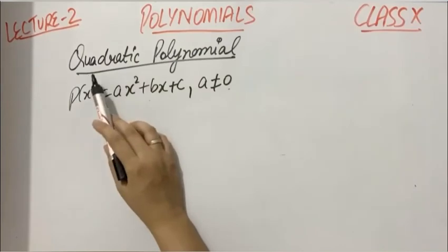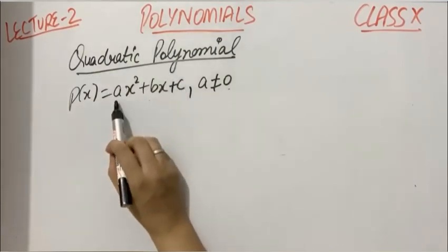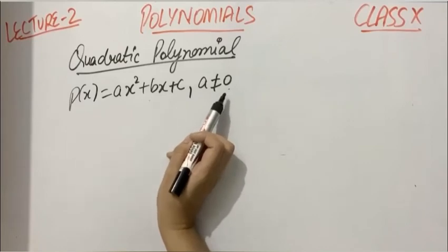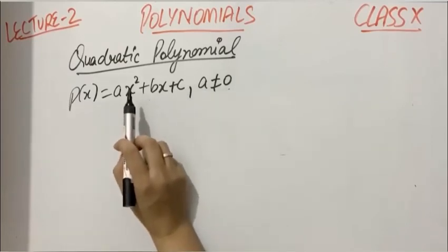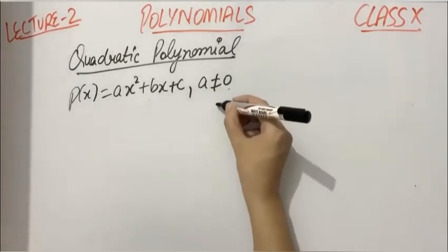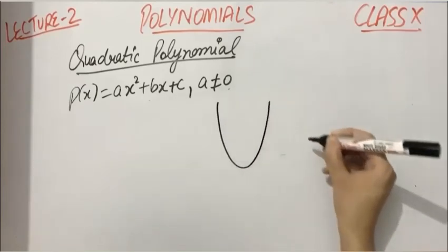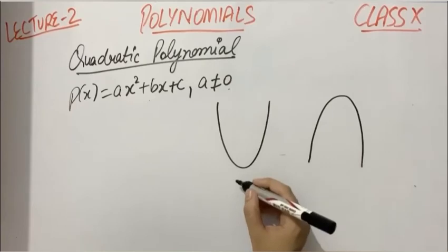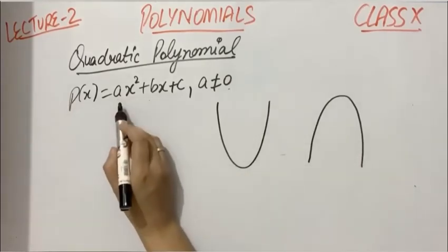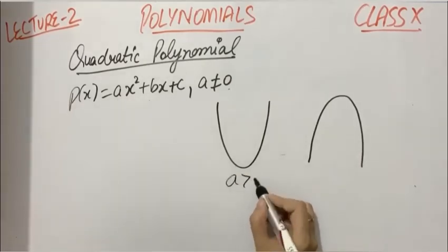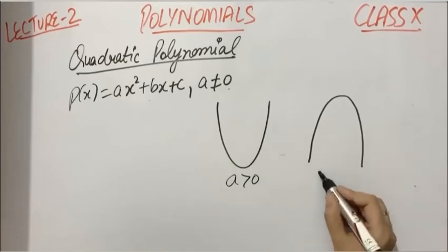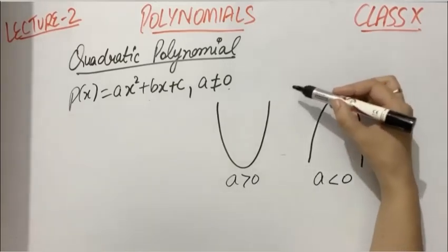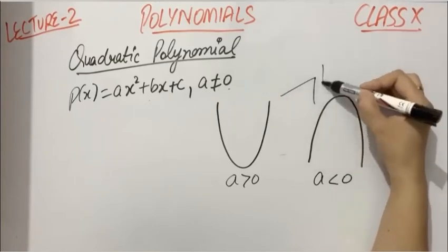Now we will discuss the graph of a quadratic polynomial, which is given by ax² + bx + c, where a is not equals to zero. This equation has one of two shapes: either opening upwards like this, or opening downwards. These shapes depend on a. If the value of a is positive, the shape will be like this, and if the value of a is negative, then the shape would be like this. These curves are known as parabolas.